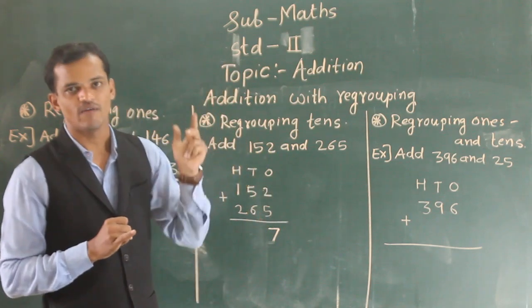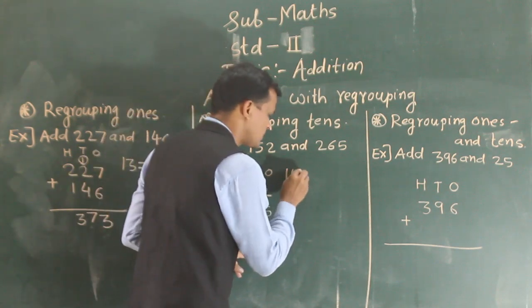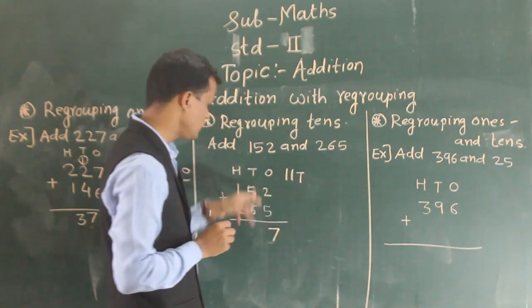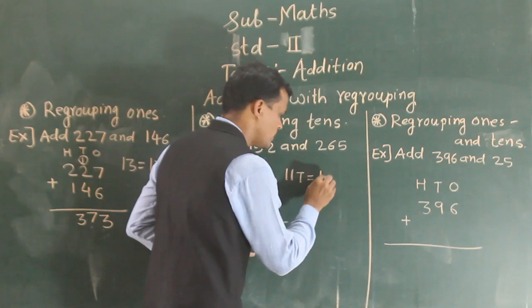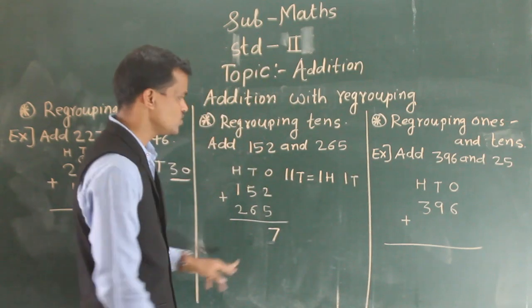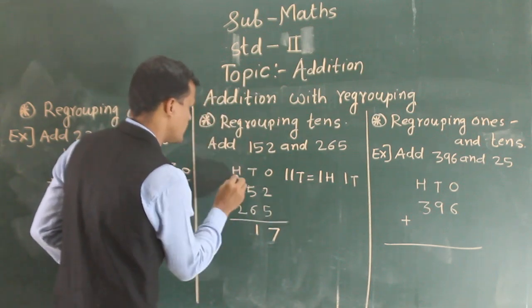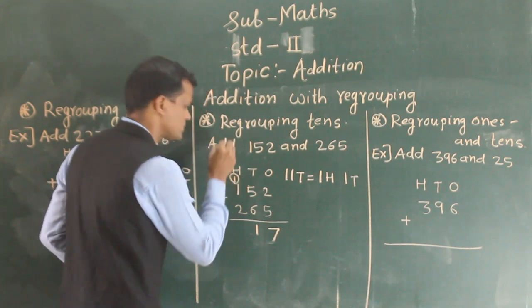Here tens, 5 plus 6. So 6, 7, 8, 9, 10 and 11. 5 plus 6, 11 tens. 11 tens means 1 hundred and 1 ten. So 1 ten I write here and 1 hundred add to the hundreds place.